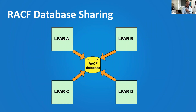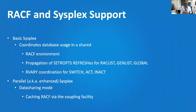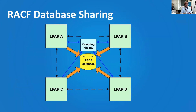You can share RACF databases — even without a sysplex — where options are contained in the ICB, the first block of the primary RACF database. It serializes access using the reserve macro, so a long-running task on one LPAR can lock out another. Most people these days share within a sysplex using a coupling facility, which allows propagation of refreshes, RACList operations, and global changes, and coordinates the Rvary command. You can also do data sharing parallel sysplex, where all LPARs share a single set of profiles loaded into the coupling facility.